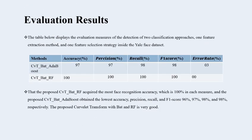Evaluation results. The table below displays the evaluation measures of the detection using two classification approaches, one feature selection, and one feature extraction. In Proposal 1, using curvelet transform with AdaBoost: accuracy is 97%, precision is 97%, recall is 98%, F1 score is 98%, and error rate is 3%. In Proposal 2, using curvelet transform with random forest, all evaluation measures are 100%, so the error rate is 0%.